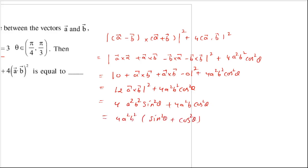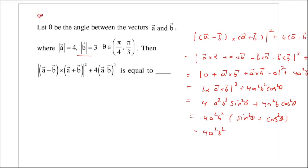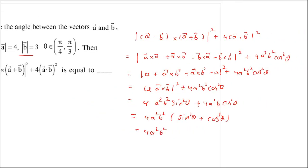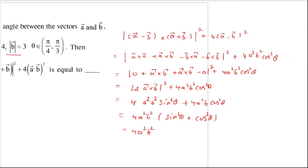So the expression simplifies to 4a²b². The values are: a = 4 and b = 3. So it is 4 × 4 × 4 × 3 × 3 × 3, which is 4 × 16 × 9 = 4 × 144 = 576. The answer is 576.